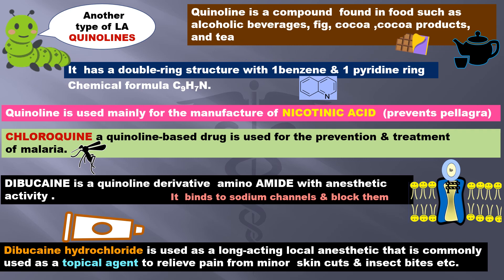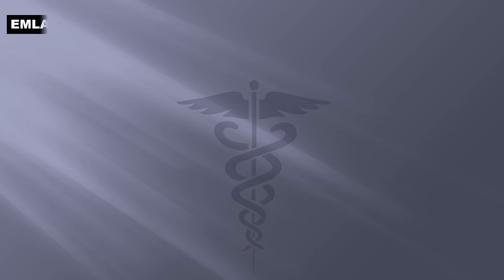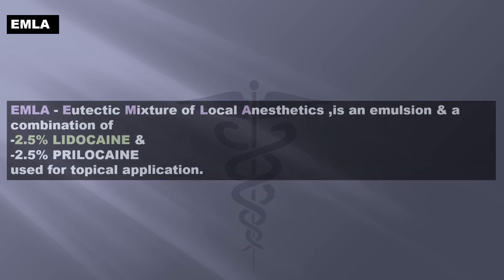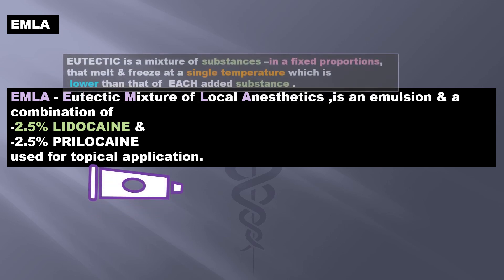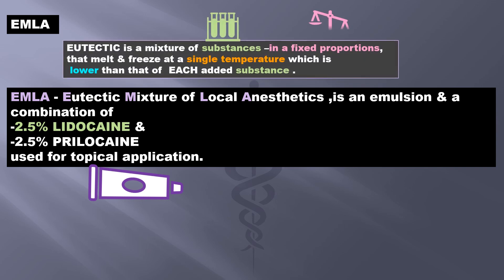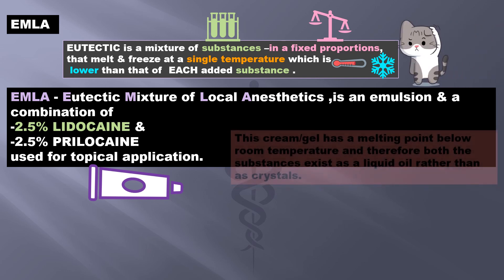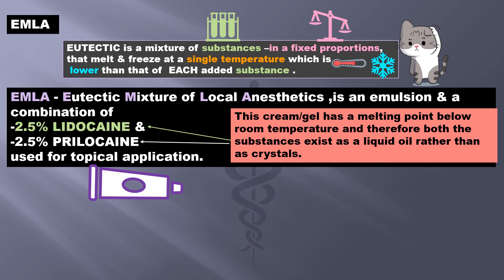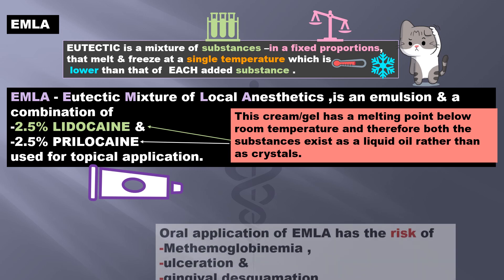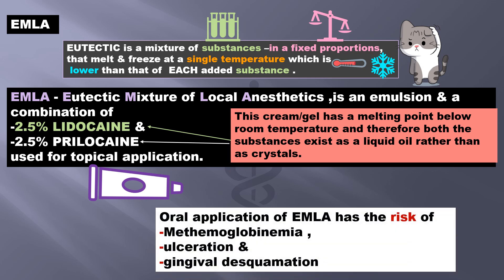Another interesting combination is EMLA — eutectic mixture of local anesthetic — which is an emulsion and a combination of 2.5% lidocaine and 2.5% prilocaine used for topical application. Eutectic means a mixture of substances in a fixed proportion that melts and freezes at a single temperature lower than that of each added substance. This EMLA cream or gel has a melting point below room temperature, and therefore both substances exist as a liquid oil rather than crystals. Oral application of EMLA, however, has the risk of methemoglobinemia, ulceration, and gingival dispigmentation.